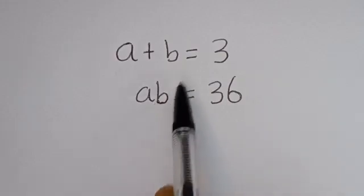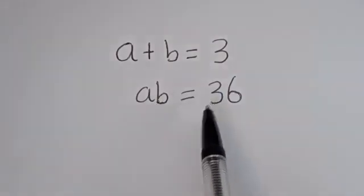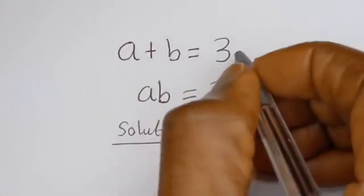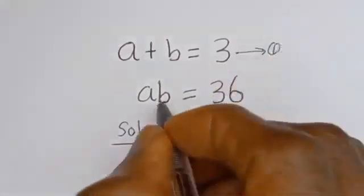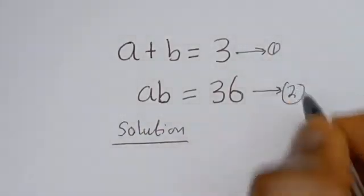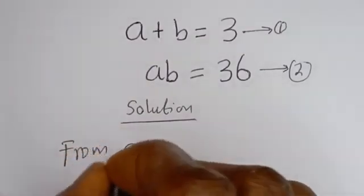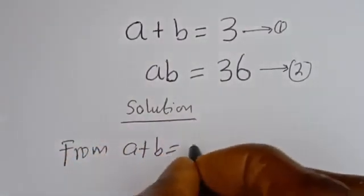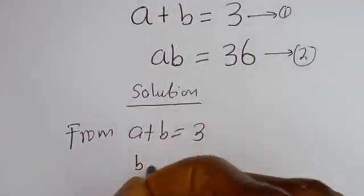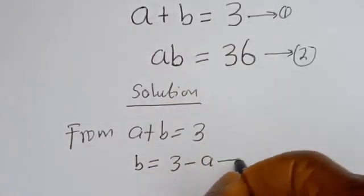Hello. How to solve for a and b in this equation: a plus b is equal to 3, and a times b is equal to 36. Solution: a plus b equals 3, this is equation 1. a times b equals 36, this is equation 2. From equation 1, a plus b equals 3, so b is equal to 3 minus a. Let's call this equation 3.